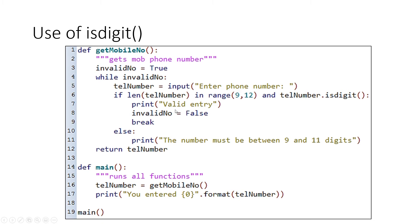If the number is within that range and is a digit, great — valid entry, break out of it. If it's not, you just give them an error message that it has to be between 9 and 11 digits. Then it scoots back up to the while loop and carries on again and again until you eventually break out of the loop and return the telephone number, which gets printed out. Very similar to what you did before.